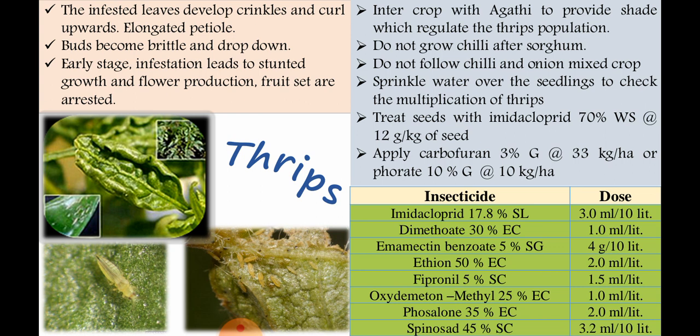Treat seeds with imidacloprid 30% WS at 12 grams per kg of seeds. Apply Phorate 10G at 10 kg per hectare, 10 days after transplanting. Give 3 sprays of any of the following insecticides at 10 to 15 day intervals to check infestation of thrips, jassids, and mites. Recommended chemicals as per Tamil Nadu Agricultural University include imidacloprid, dimethoate, emamectin benzoate, ethion, fipronil, oxydemeton, phosalone, and spinosad, covering both chemical and biological insecticides to control chili thrips.